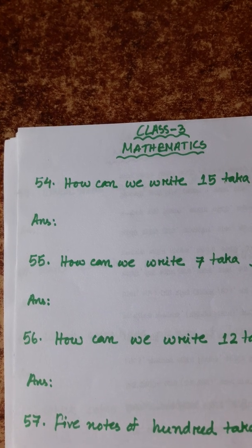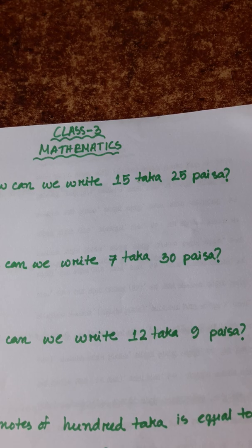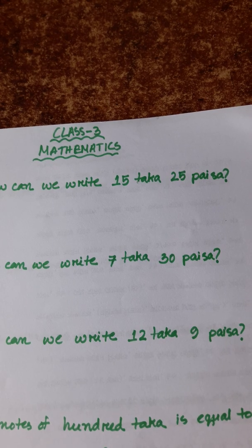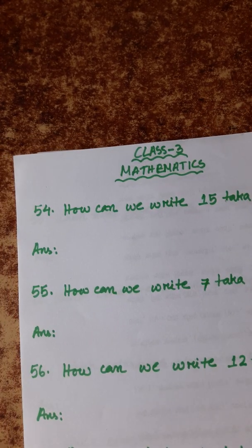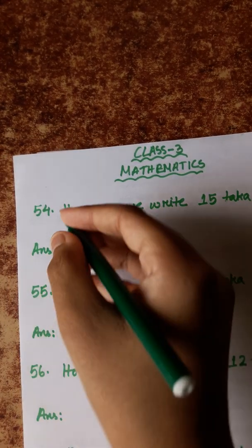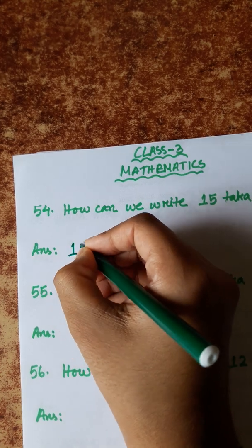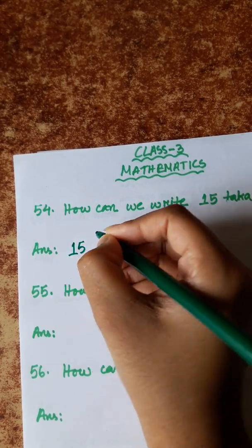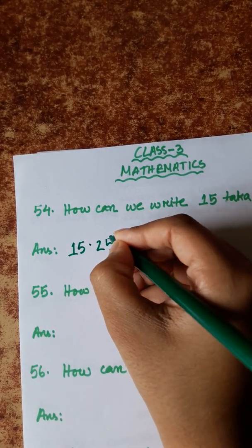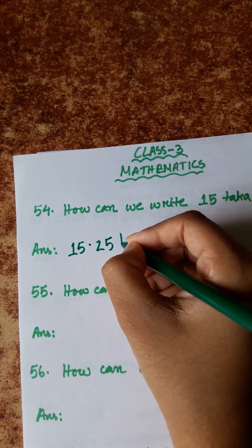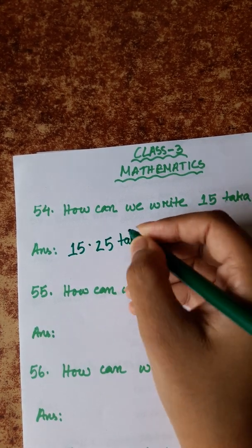Our first question is: how can we write 15 over 25? We write it as the decimal number 15.25.